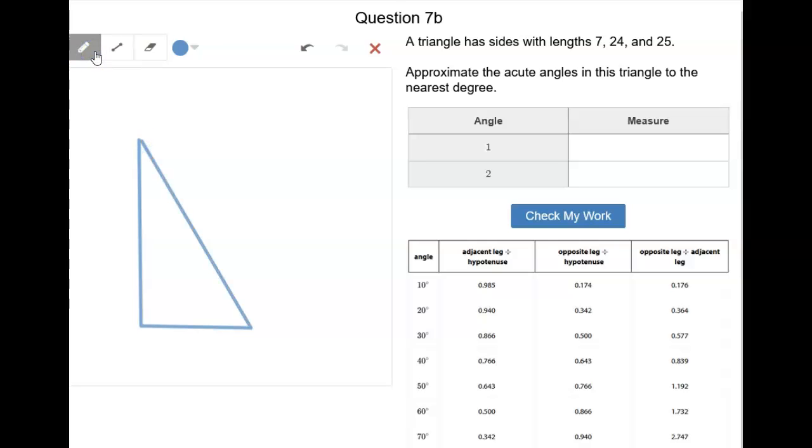And so we know that we have a 7, a 24, and a 25. And so we just have to figure out, we know that this is 90.